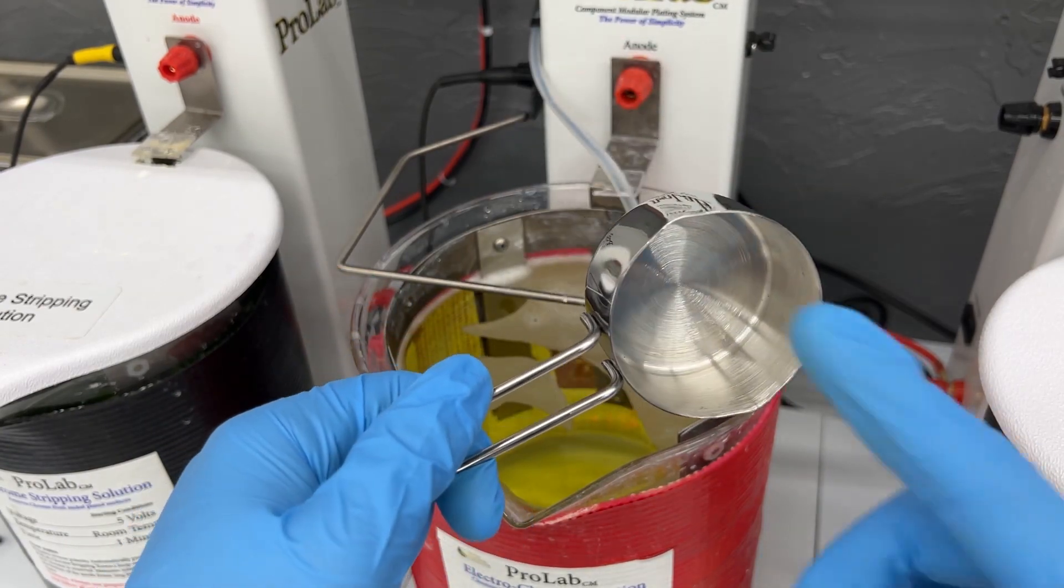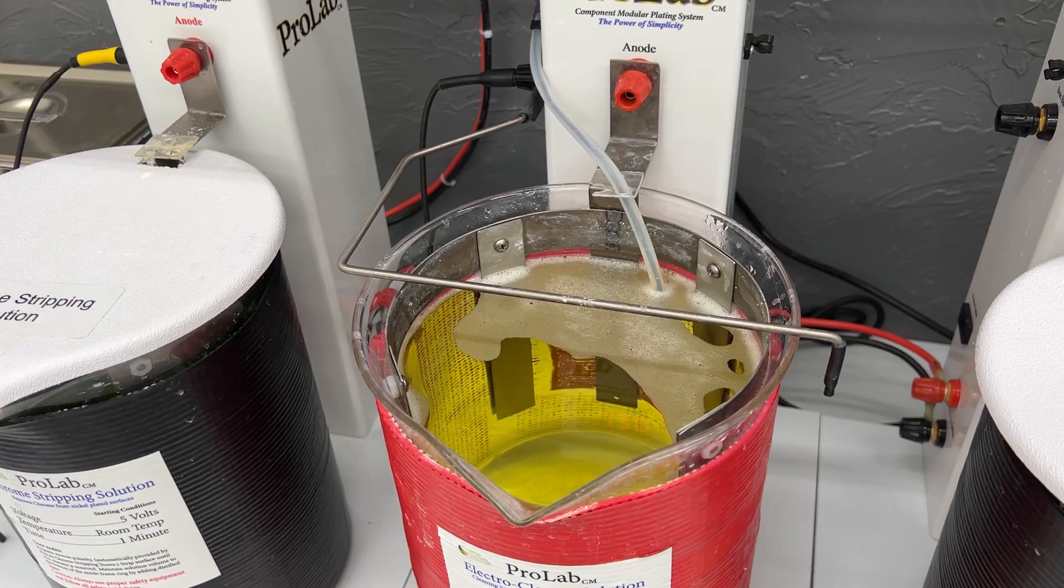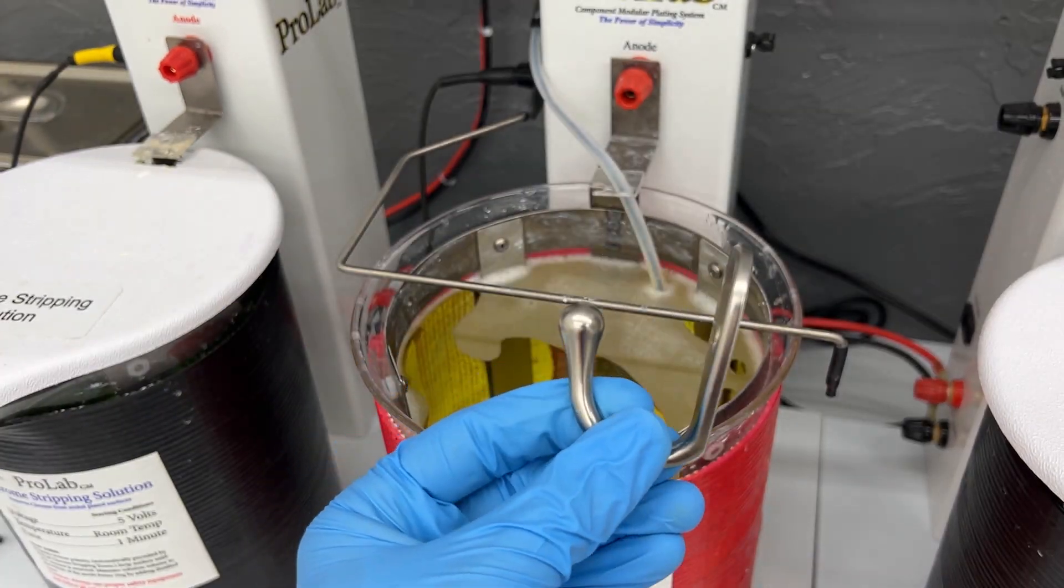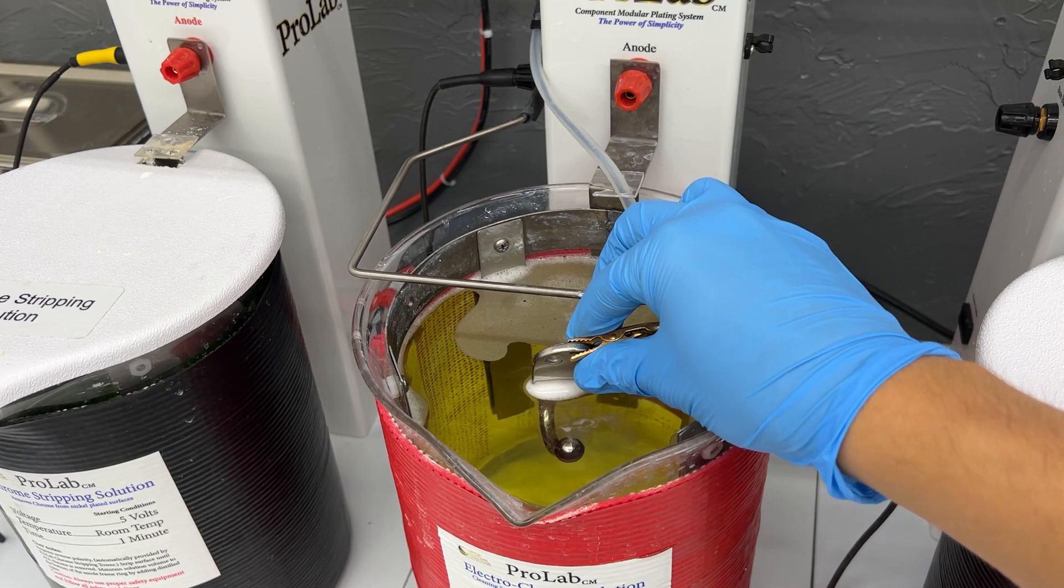This hanger looks normal, but when I go to electro clean it, it is not bubbling, giving us a sign that it might have a coating on it preventing it from wetting out.